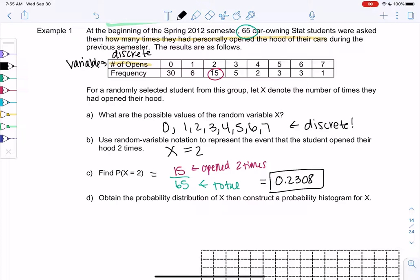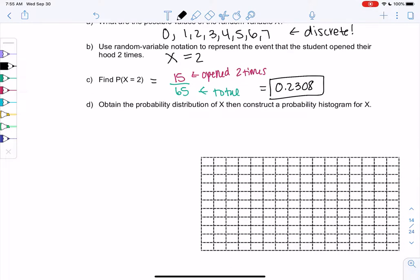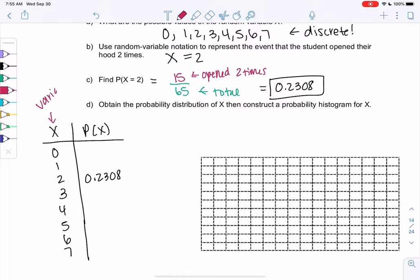So let's make a probability distribution. So it's going to look just like a frequency table. So we'll put our variables. And then rather than putting frequency or relative frequency, we're going to put probability. But otherwise, it's the same table. I'm going to abbreviate it. Instead of probability, I'm just going to write P of X to abbreviate it. And we already found 2, 0.2308. So we're just putting the variable in the first column and the probability in the second column.